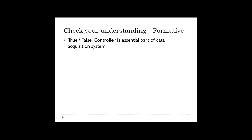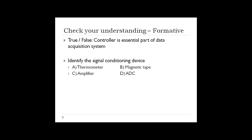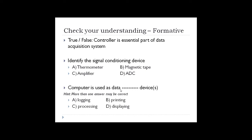A controller is not an essential part of a data acquisition system — the answer to that question is false. To identify the signal conditioning device: a thermometer is a sensor, a magnetic tape is a recorder, an amplifier is the signal conditioning device, while an analog to digital converter is part of the DAQ hardware. A computer is used for data logging, data processing, and sometimes data displaying, but it is not used for data printing.